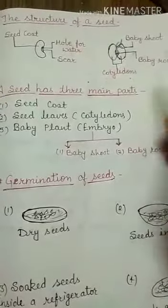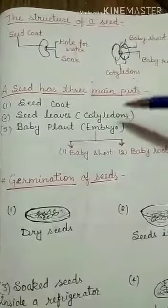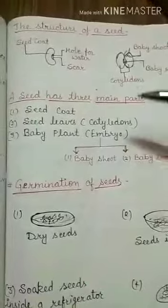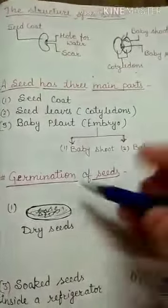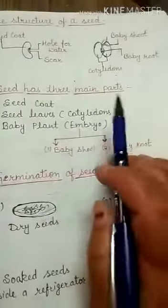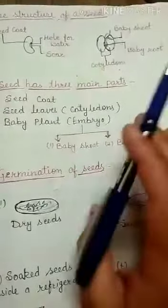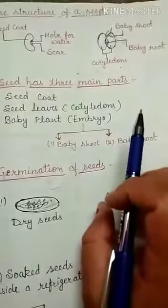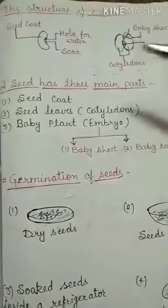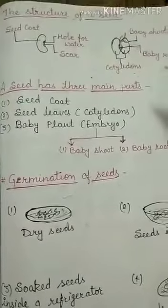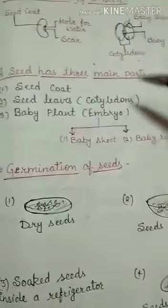Some seeds like gram, pea, and beans have two cotyledons — they are called dicotyledons. Wheat, maize, and rice have one cotyledon — they are called monocotyledons. Between the cotyledons is the baby plant called the embryo.